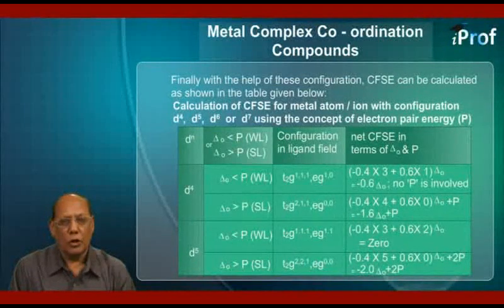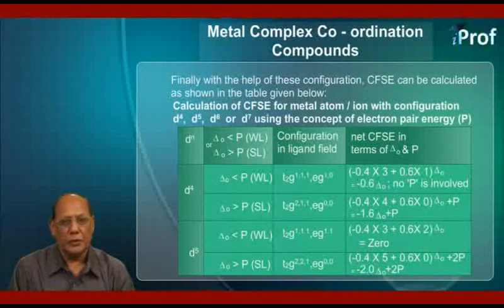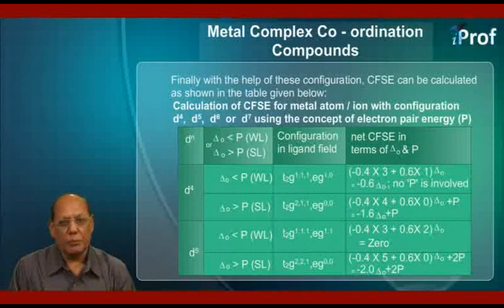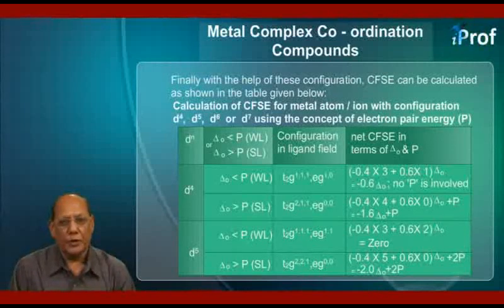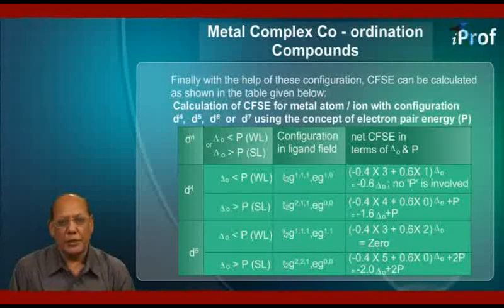We have four columns. In the first column, we have the configuration in the D sub-shell of the metal atom or ion. In the second column, we have two aspects: delta O less than P, that is for weak ligands, or delta O more than P, that is for strong ligands. In the third column, the configuration in the ligand fields in both cases will be shown. Similarly, in the last column, net CFSE in terms of delta O and P will be shown.